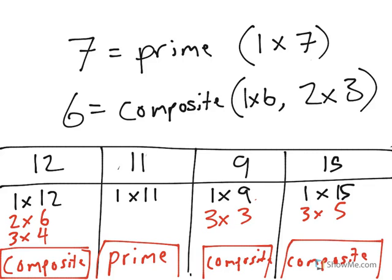If there's more than one way to multiply to get to a given product, that number is composite. If you can only multiply 1 and that number, that number is prime.